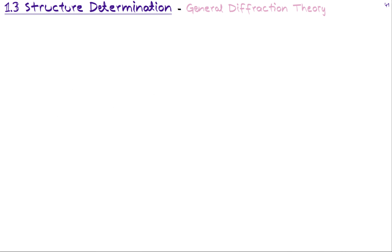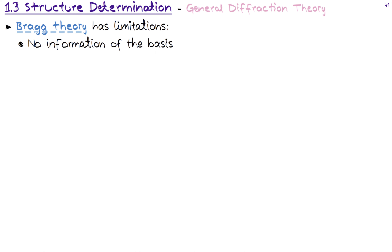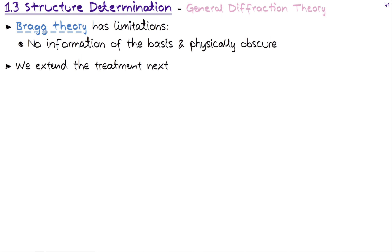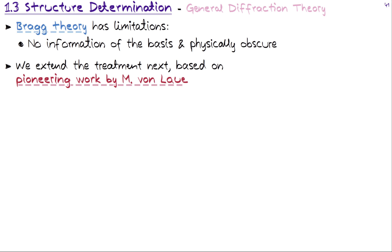We first remind ourselves that the Bragg theory has limitations. Its main limitation is that it's a very simple treatment and doesn't provide access to information related to the basis of the lattice. Most crystalline structures have something in the basis of the lattice, not just a single individual atom. The Bragg theory is then too limited to be of practical use. It's also physically obscure what those planes really are, since we know we're dealing with an atomic lattice. These are the main disadvantages of Bragg theory.